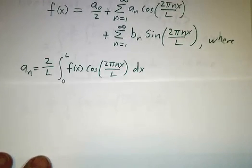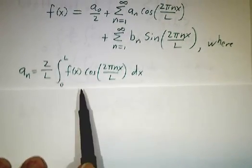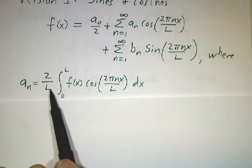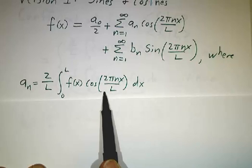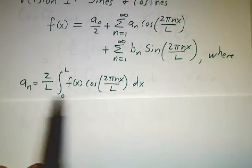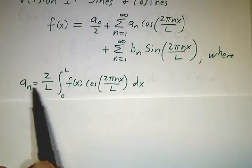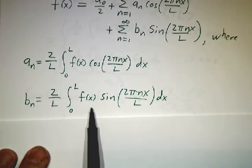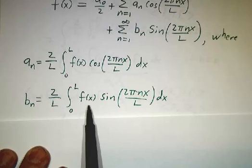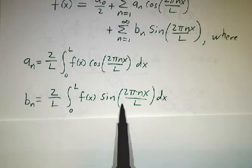And the coefficients are: the an's are given by this formula. It's 2 over L, the integral of f times cos. That includes the formula for a0. And bn is given by 2 over L times the integral of f times sin.